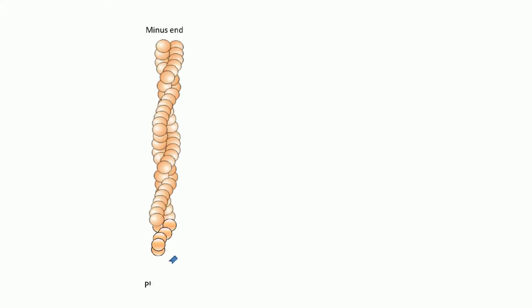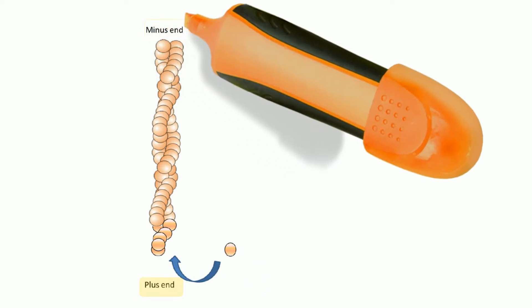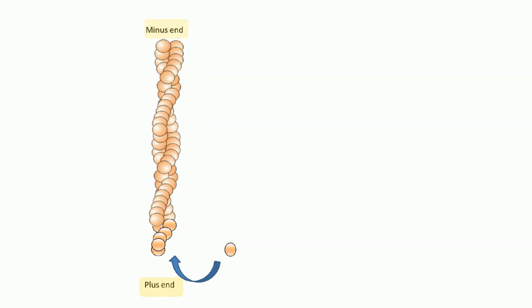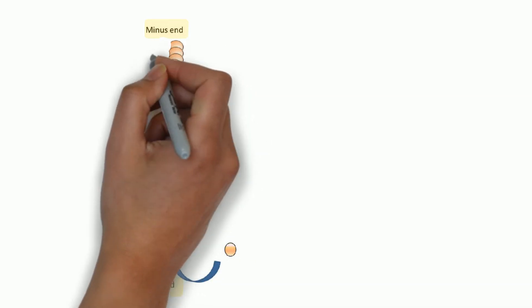Microfilaments have the appearance of a double-stranded helix. Similar to microtubules, microfilaments also have polarity and the ability to polymerize and depolymerize.